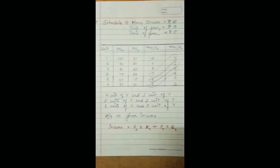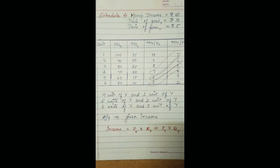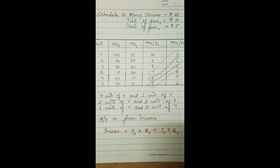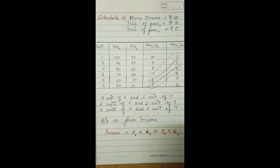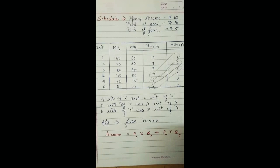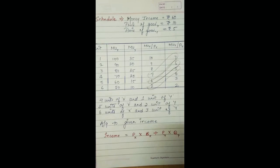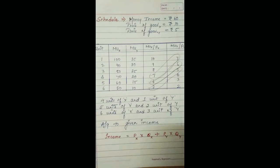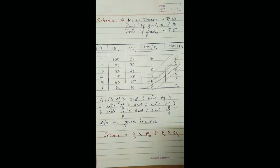To make this concept easier to understand, I have drawn a schedule. I know the concept is a little challenging and requires extra attention, but it will be easier with the help of the schedule. Money income is 60 rupees — that means you have 60 rupees to spend on two goods. Price of good X, say biscuit, is 10 rupees, and price of good Y, say Kurkure, is 5 rupees. At the first unit of consumption of good X you derive 100 units of satisfaction.